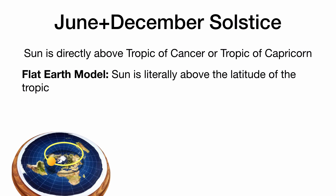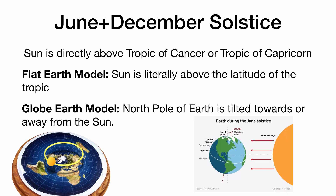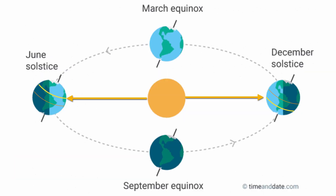Our calculations are all based on globe Earth geometry. At the June and December solstice, the sun is directly above one of the tropics. If the full moon is directly opposite the sun, then the full moon is above the Tropic of Capricorn in the June solstice. Likewise, for the December solstice, the full moon should be directly above the Tropic of Cancer.